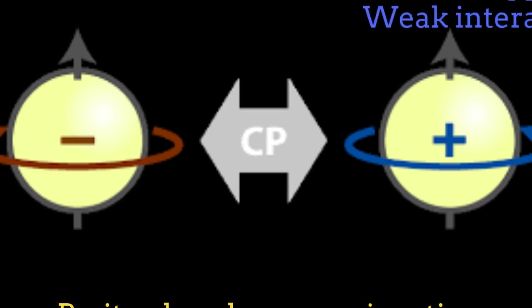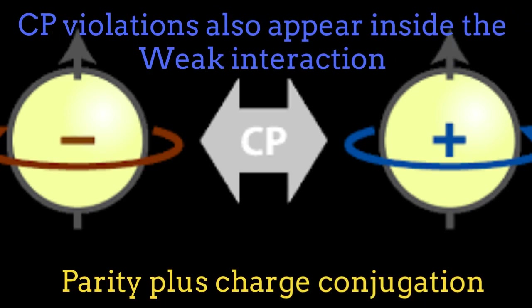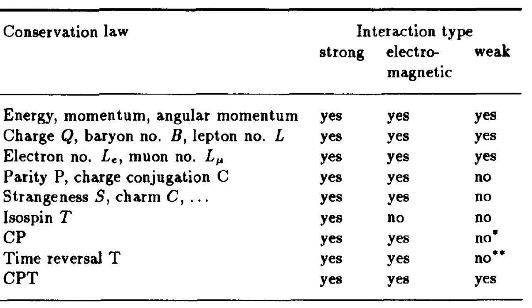The weak interaction doesn't even obey the CP symmetry, which is the combined operation of parity and charge conjugation. This is the list of quantities conserved and non-conserved by the weak interaction, in comparison with the strong and electromagnetic interaction.